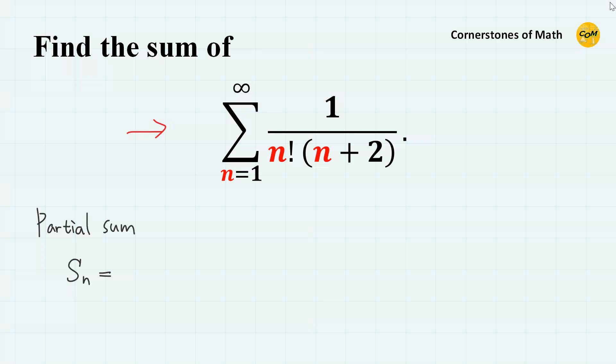Alright, first, we need to find the partial sum Sn, which is sigma 1 over k factorial times k plus 2, where k is from 1 to n.